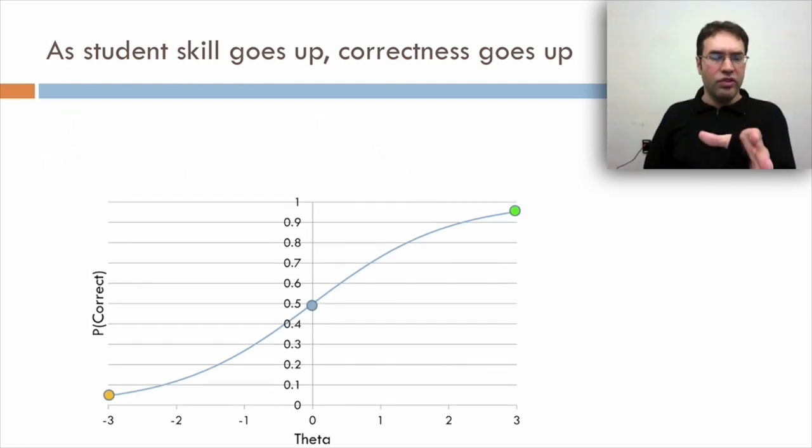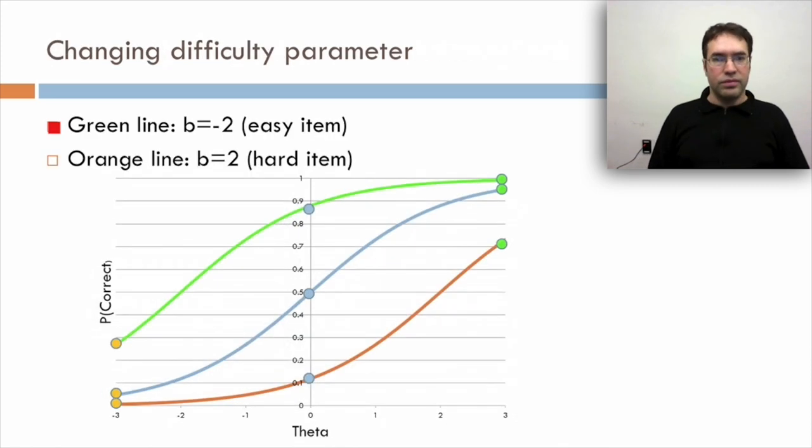Now let's look at three students. A green student who really knows their stuff with theta of 3 has probability of getting it right 95%. A student who doesn't really know their stuff with theta of 0 has probability 50%. And a student who really doesn't know their stuff with theta of negative 3 has probability of correctness 5%.